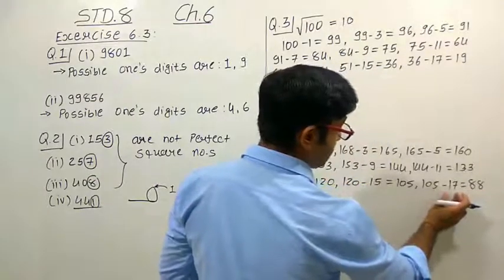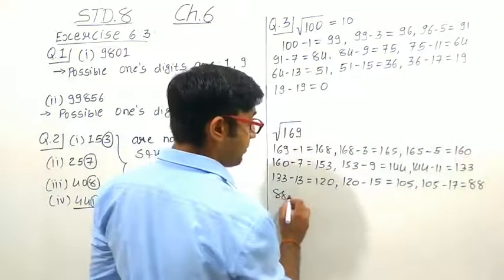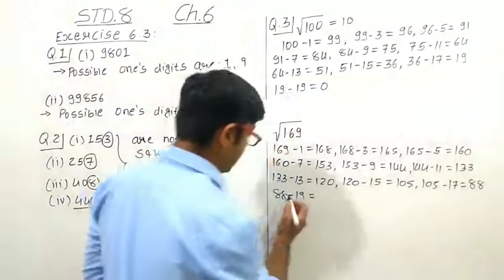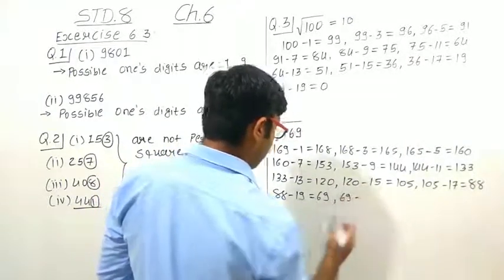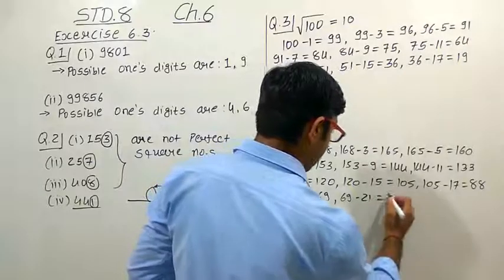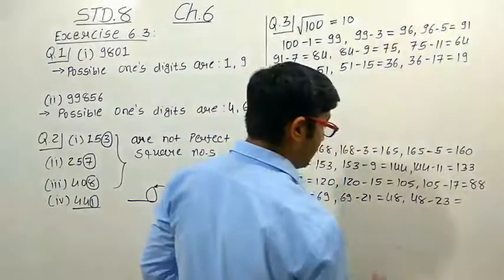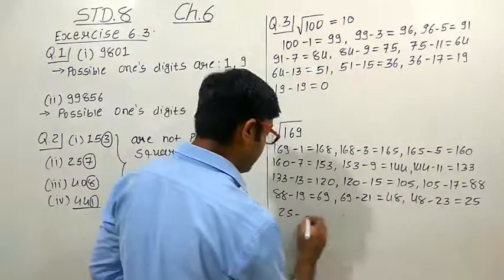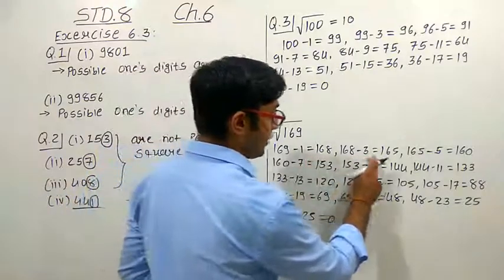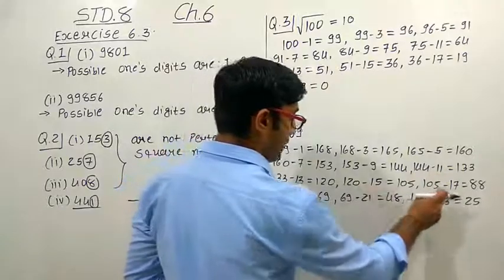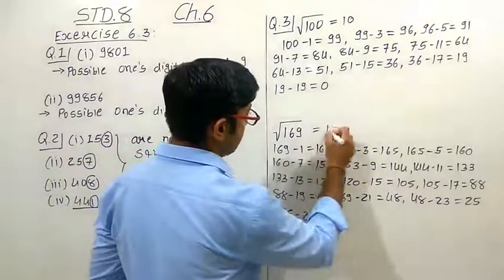Continuing: 88 minus 19 equals 69 (step 10). Then 69 minus 21 equals 48 (step 11). Then 48 minus 23 equals 25 (step 12). Then 25 minus 25 equals 0 (step 13). We reach 0 after 13 steps. So the square root of 169 is 13.